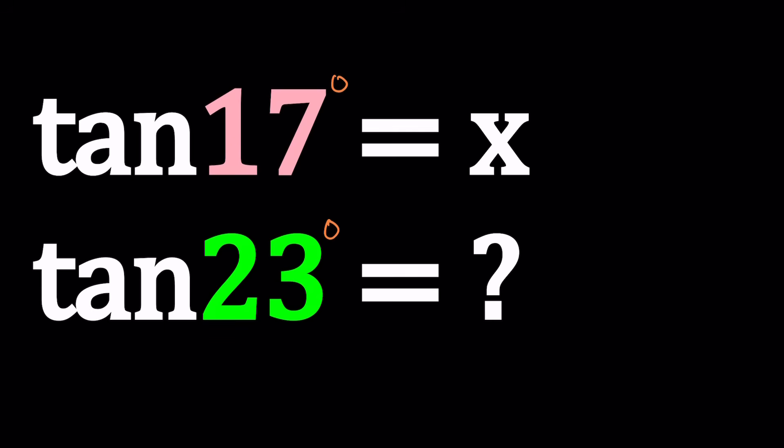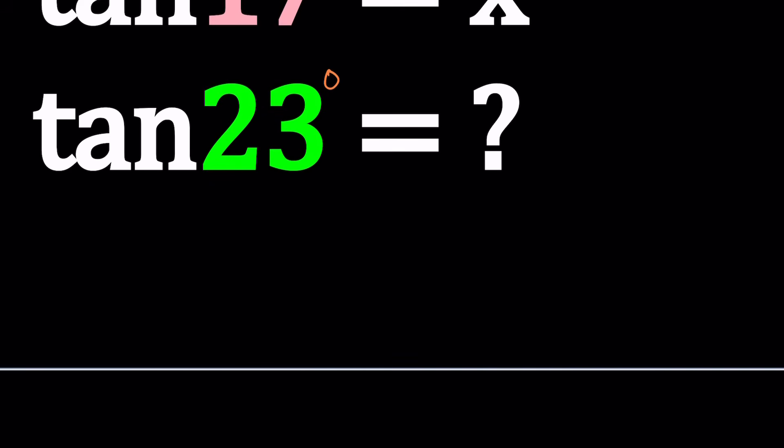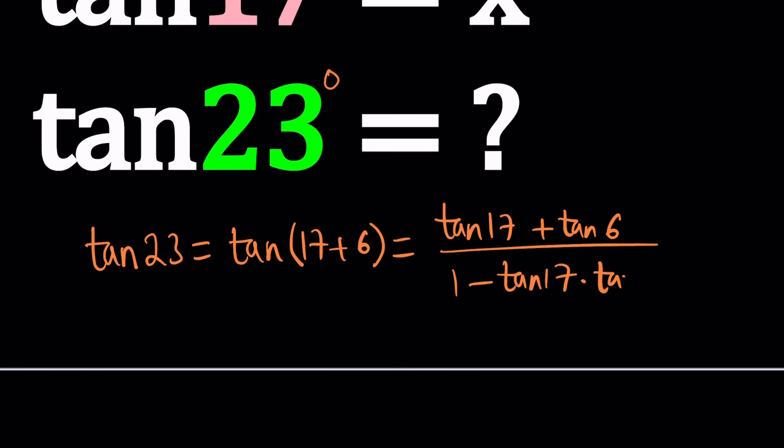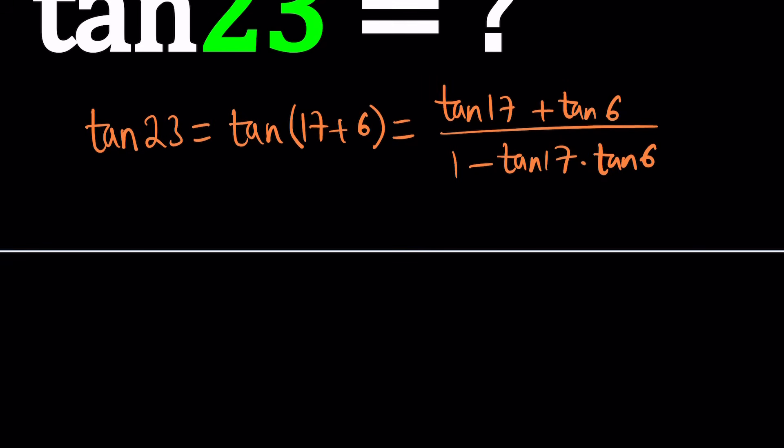And we're supposed to find the value of tangent 23 degrees. But how are we going to find it? The answer needs to be in terms of x. So we're given x and we need to associate tangent 23 degrees with that. So let's go ahead and see how we can approach this problem in different ways.